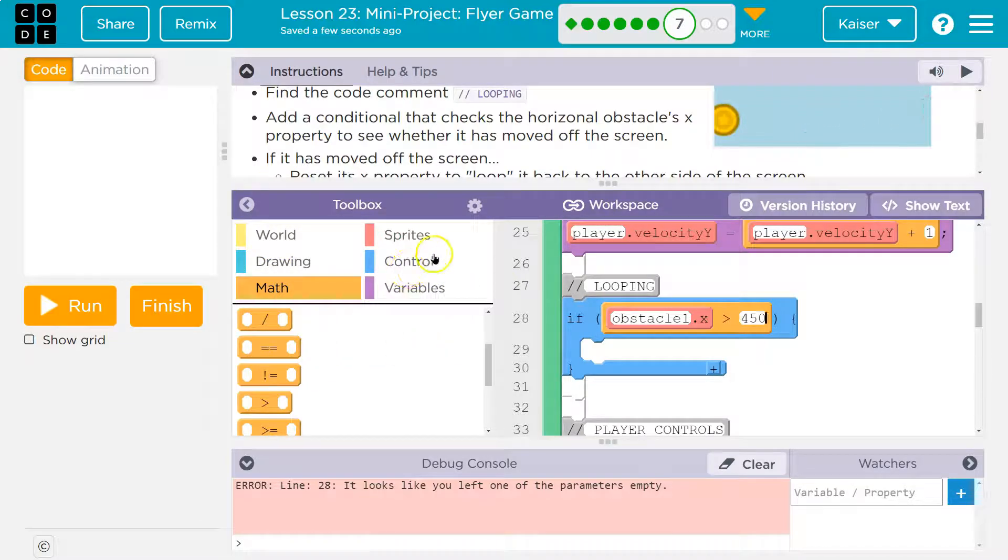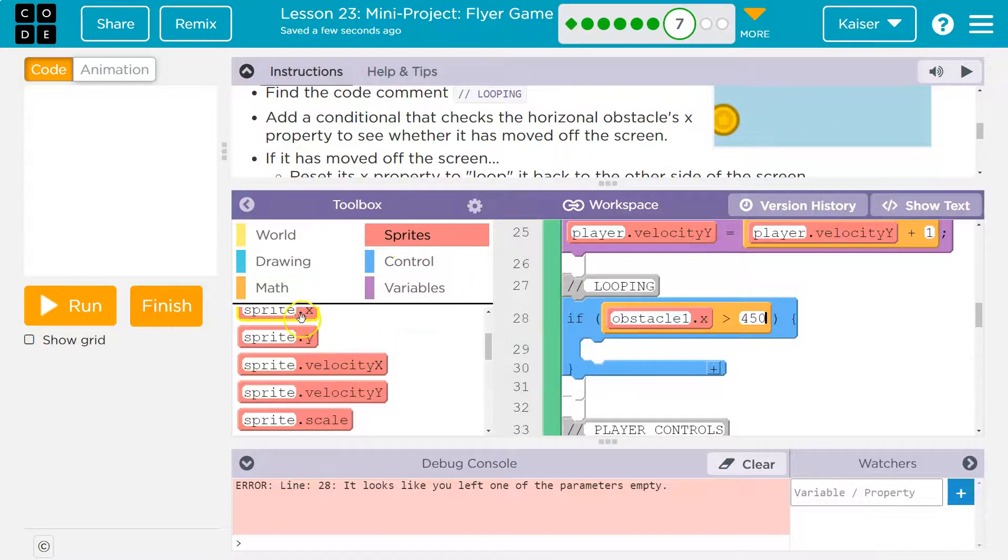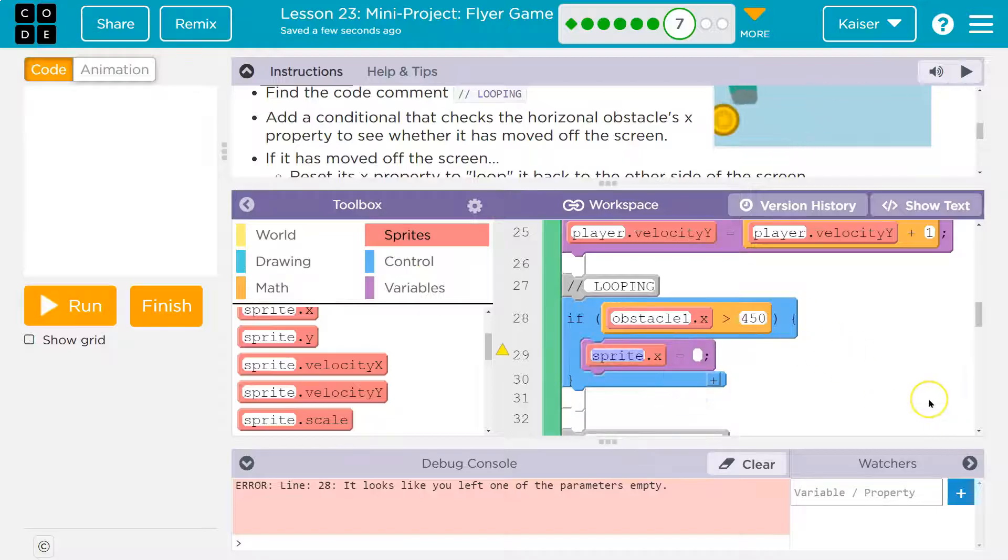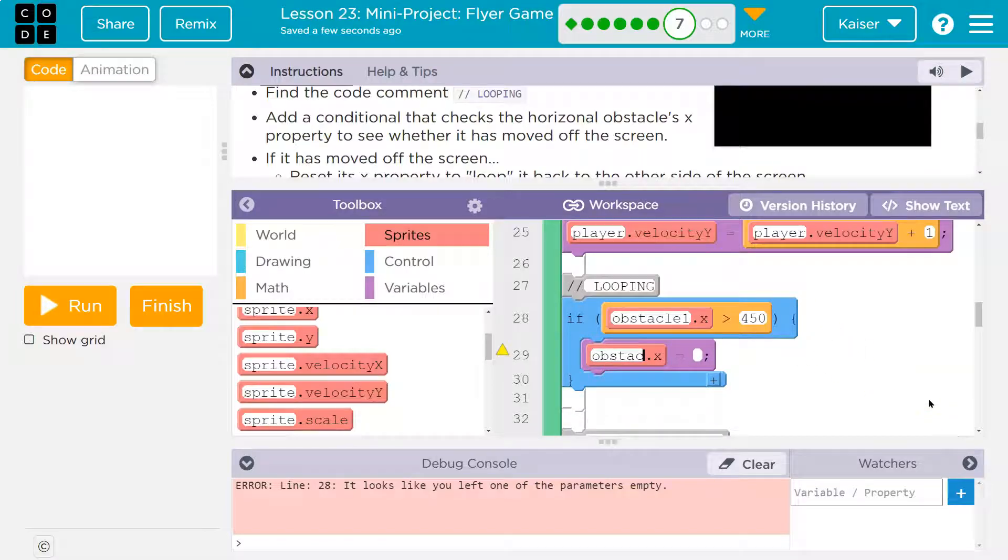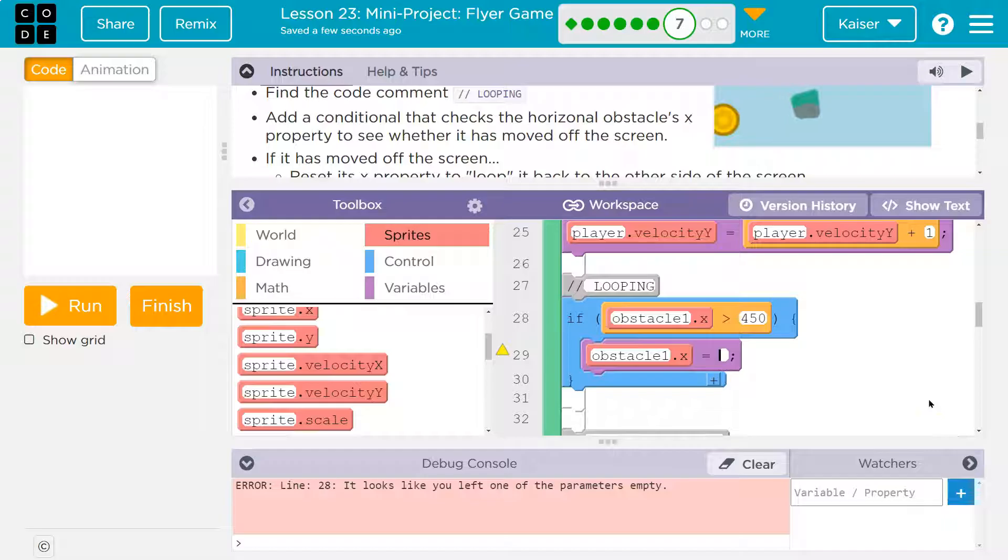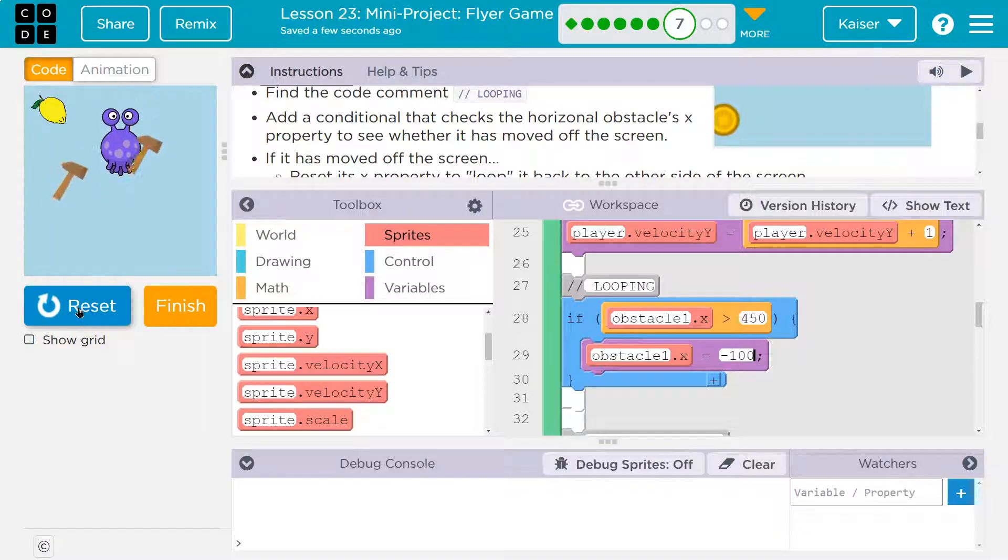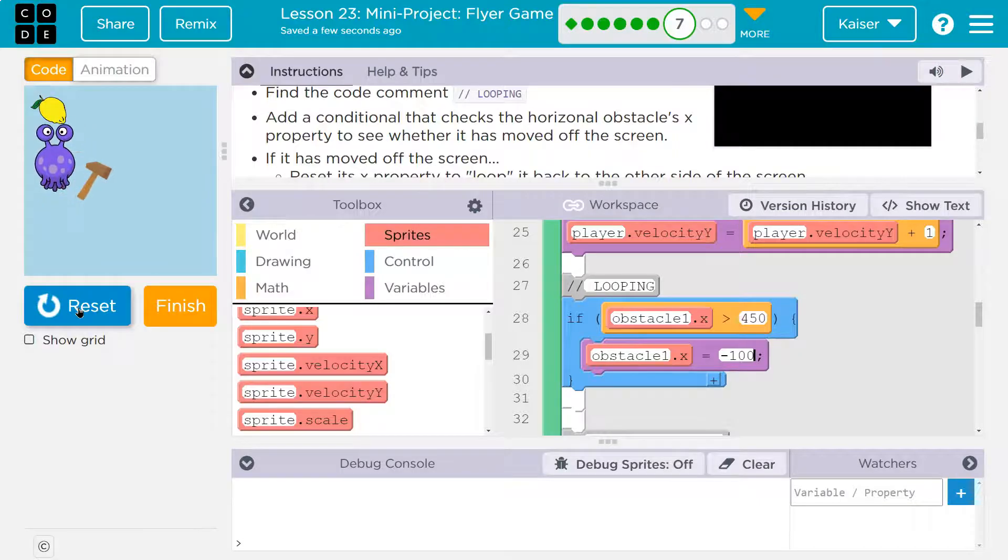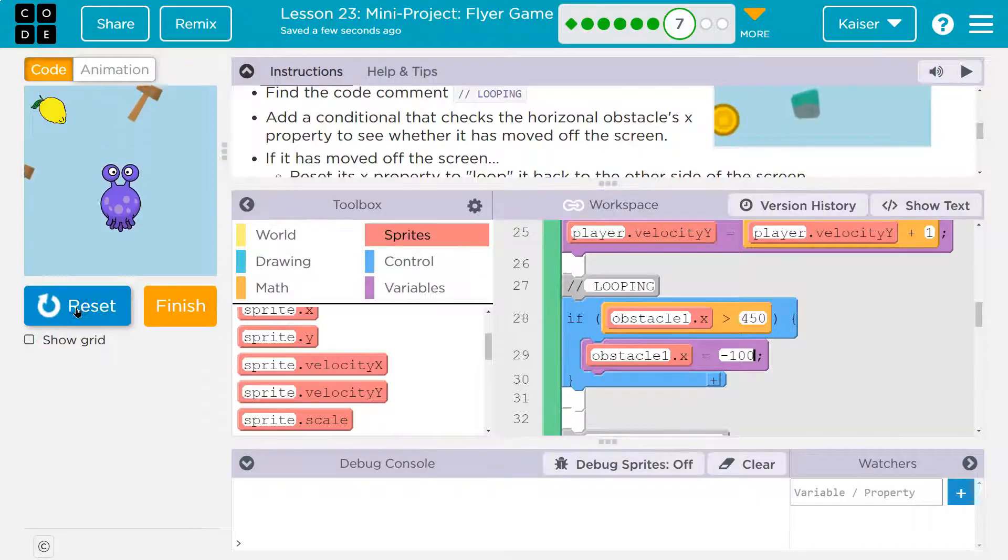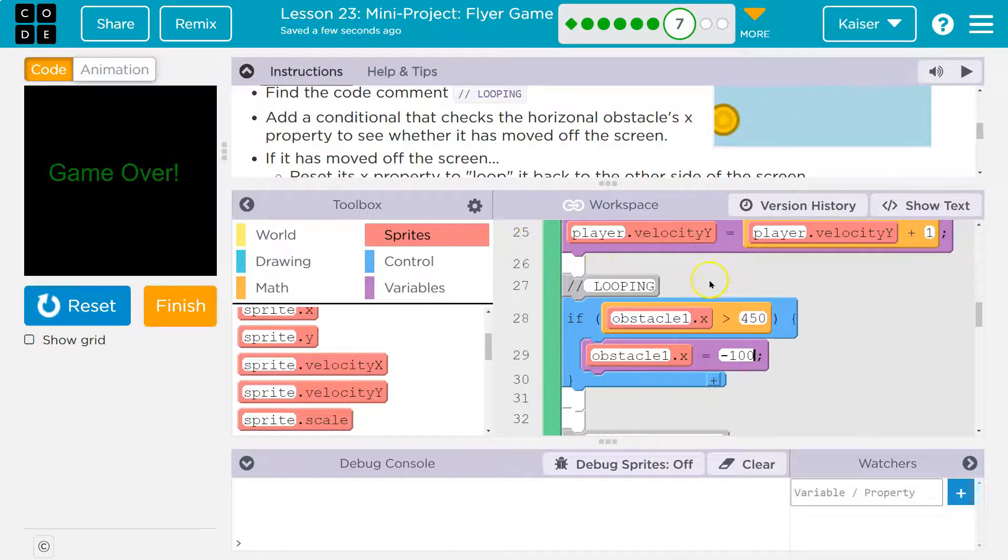Let's grab another sprite x and say if it's greater than 400, obstacle one dot x is going to be equal to negative 100 for a starting point. Let's see, now I just have to stay alive long enough, which is kind of a challenge. Oh, and there it goes.